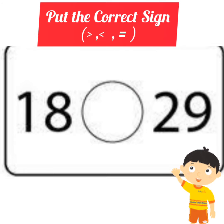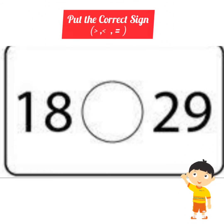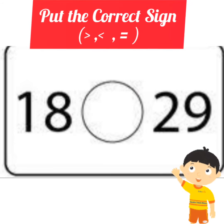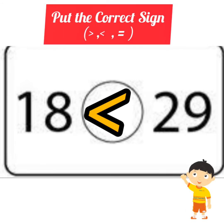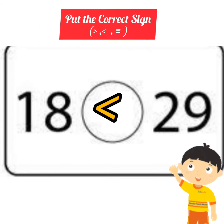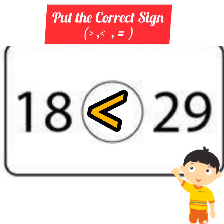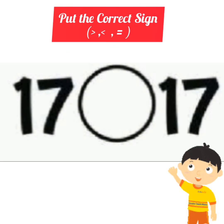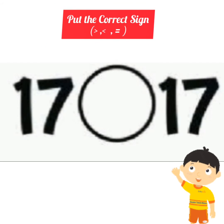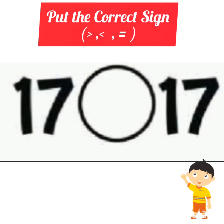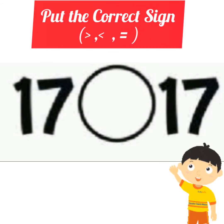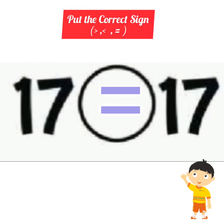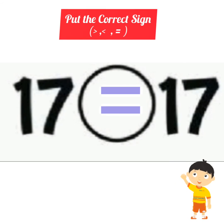Here we have two numbers: eighteen and twenty-nine. Which one is the greater number? Yes, twenty-nine is the greater number. Eighteen is less than twenty-nine. Here we have two numbers: seventeen and seventeen. Both are same numbers, so put the sign of equal to.